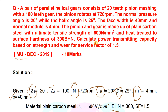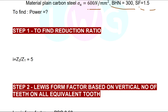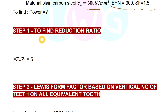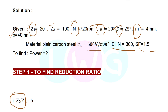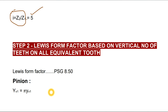We need to calculate power transmitting capacity based on both strength and wear. Step 1: find the reduction ratio. The formula is i = z2/z1. Substituting z2 = 100 and z1 = 20, the reduction ratio i = 5.